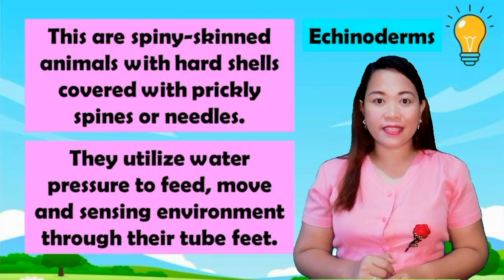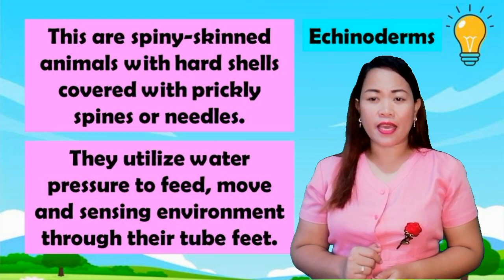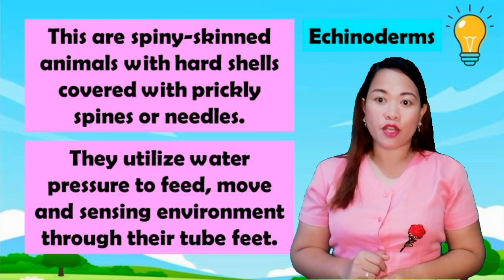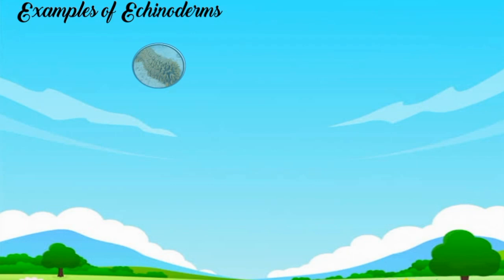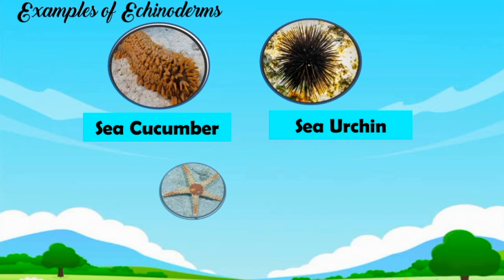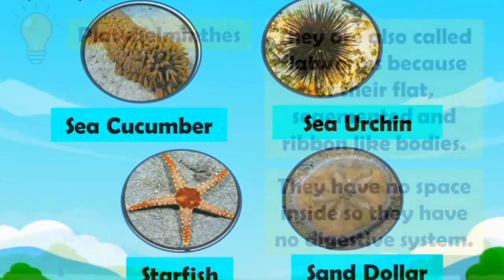Echinoderms are spiny-skinned animals with hard shells covered with prickly spines or needles. They utilize water pressure to feed, move, and sense their environment through their tube feet. Examples of echinoderms: sea cucumber, sea urchin, starfish, sand dollar.